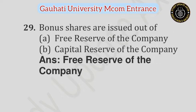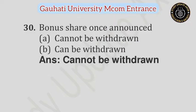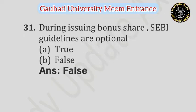Question number 29: Bonus shares are issued out of — Option A: Free reserve of the company, Option B: Capital reserve of the company. Answer is Free reserve of the company. Question number 30: Bonus shares once announced — Option A: Cannot be withdrawn, Option B: Can be withdrawn. Answer is Cannot be withdrawn. Question number 31: During issuing bonus shares, SEBI guidelines are optional — Option A: True, Option B: False. Answer is False.